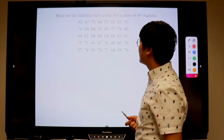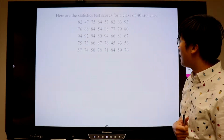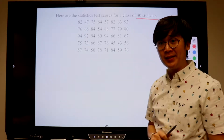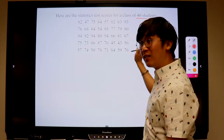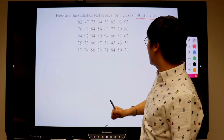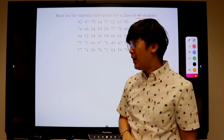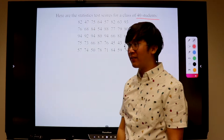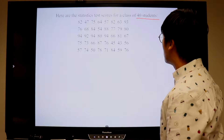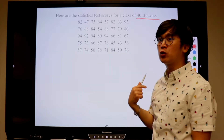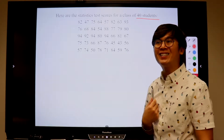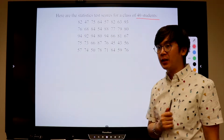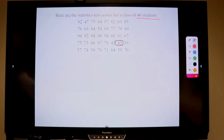This is our second case, and in this second case we are given statistics scores of 40 students. The test is out of 100 and these are basically their points after taking that exam. If we're going to compute for the range, what is the lowest and the highest scoring statistics test scores among my 40 students? What is the lowest and what is the highest?